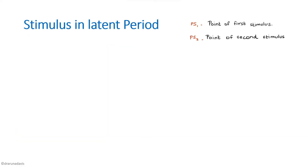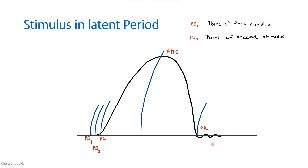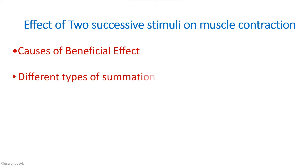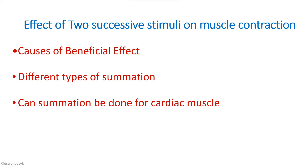When the stimulus is given during the latent period, no change will occur because the muscle is in a refractory stage. The graph will look like the simple muscle curve itself, but with two points of stimulation — one for the first and one for the second stimulus. The questions for this experiment include: what are the causes of the beneficial effect, what are the different types of summation (temporal summation and quantal summation), and can summation occur in cardiac muscle — which requires the second stimulus to be during the relative refractory period.